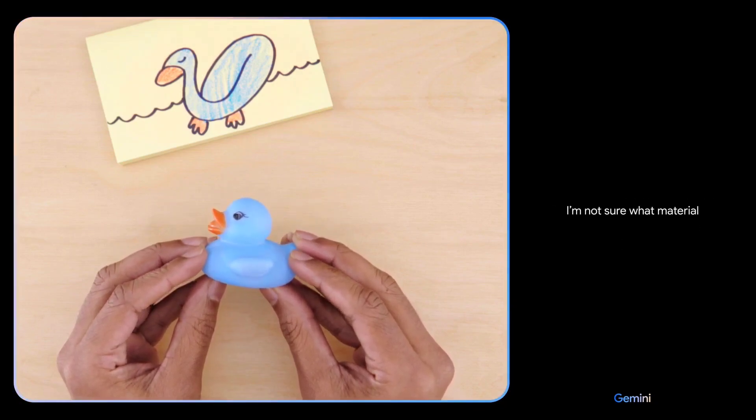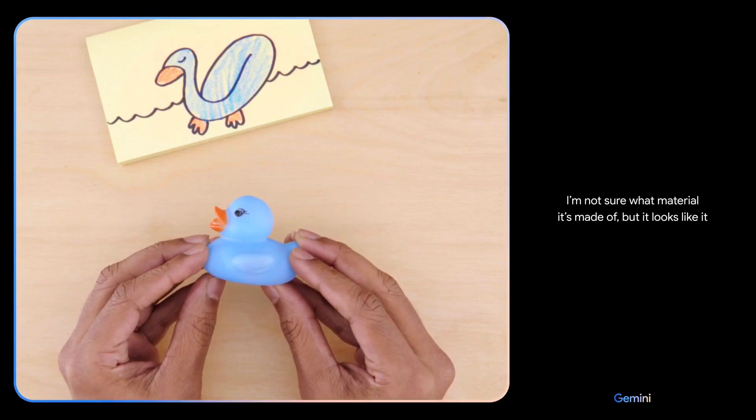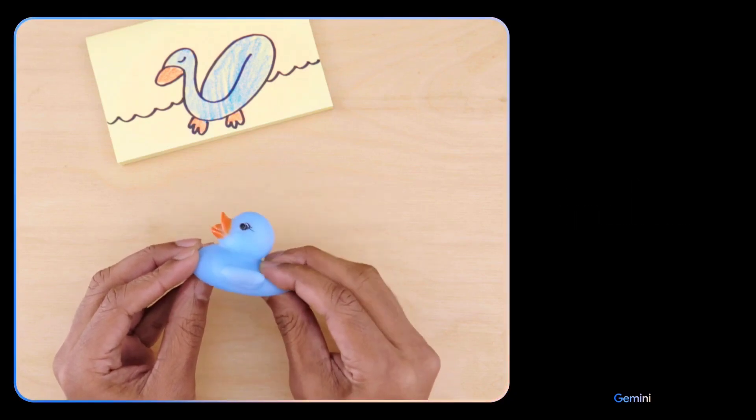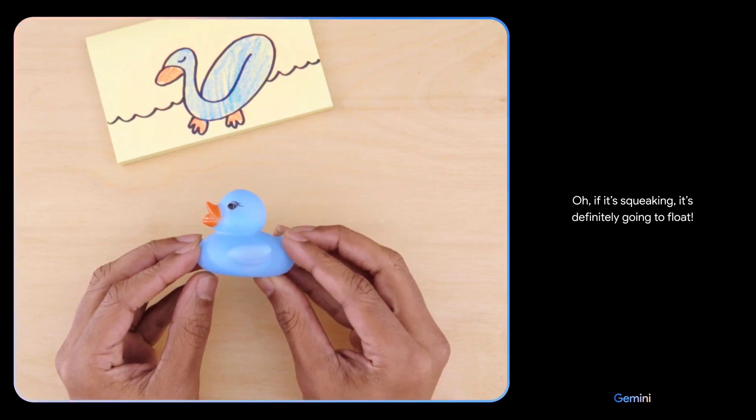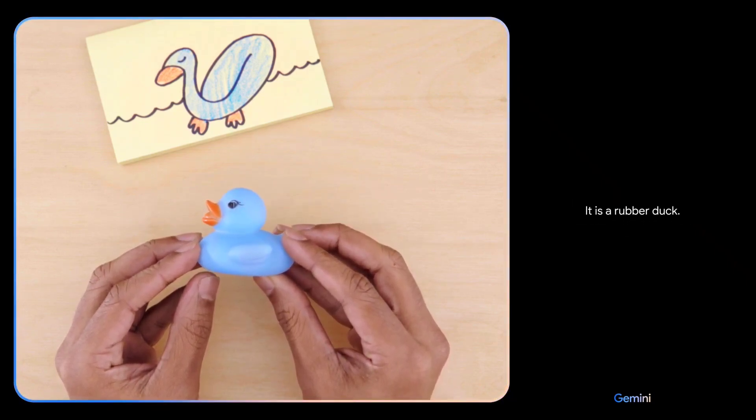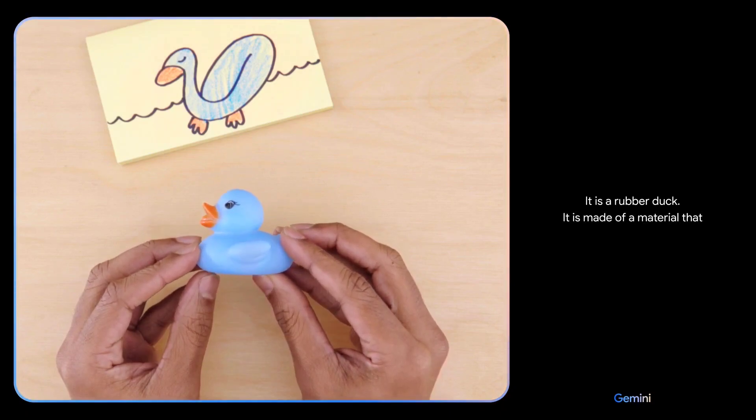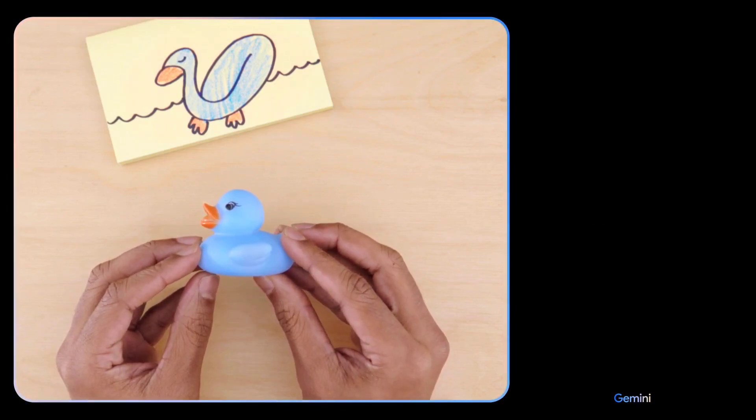Would this float? I'm not sure what material it's made of, but it looks like it might be rubber or plastic. What if I tell you it's making a squeaking sound? Oh, if it's squeaking, it's definitely going to float. It is a rubber duck. It is made of a material that is less dense than water. Can you teach me how to say this in a different language and give me a few options?